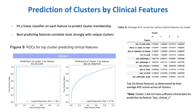Next, I fit a linear classifier on each feature to score how well it is able to predict a patient's cluster membership. On the left, you can see two ROC curves for well-predicting clinical features. ICD-10 code description, for instance, perfectly distinguishes whether a patient belongs to cluster one or not, while age on the right performs well but slightly worse.